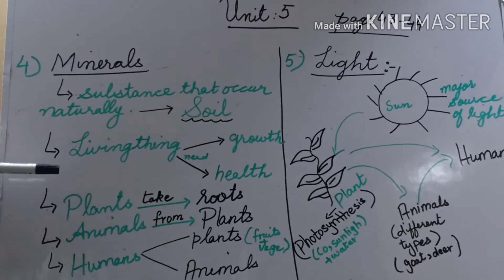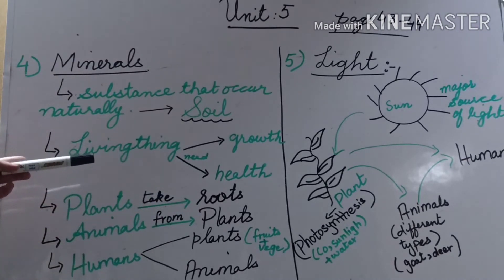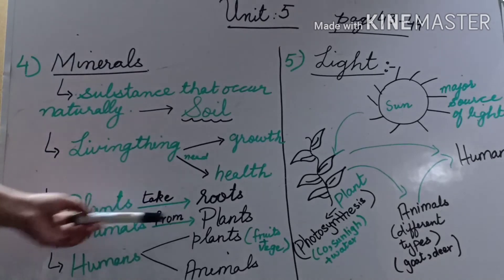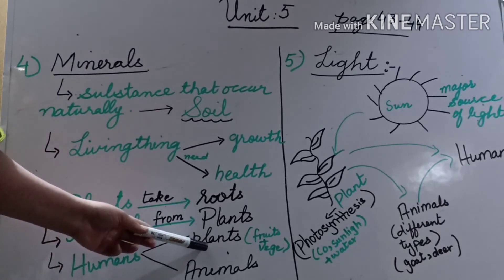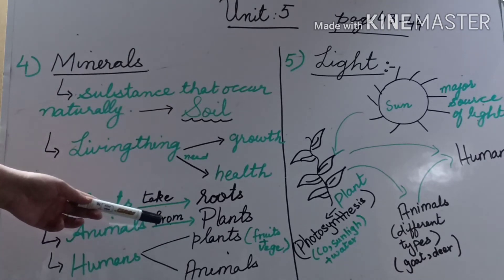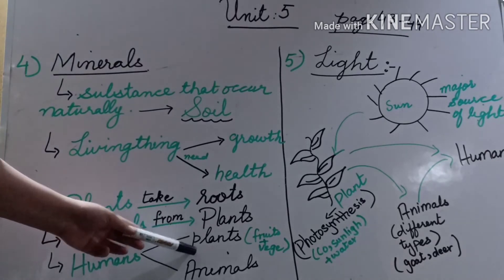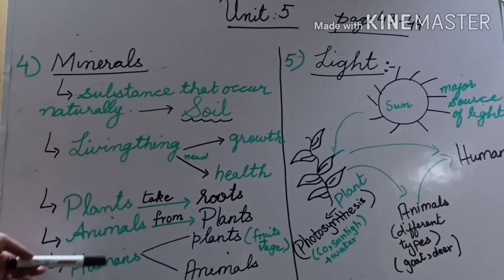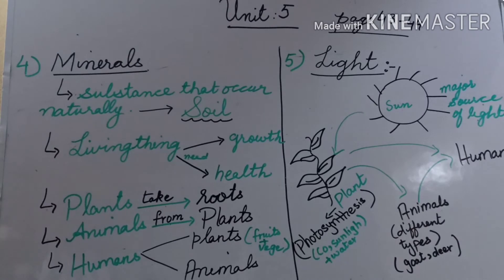How do living things get minerals? Plants take minerals from their roots. Animals take minerals from plants — when herbivore animals graze on plants and eat them, they get the minerals. Humans have two ways of getting minerals: when they eat plants like fruits and vegetables, they get vitamins and minerals, and when humans eat other animals, they also get minerals. So plants get minerals from roots, animals from plants, and humans from both plants and animals.